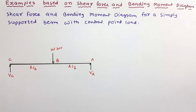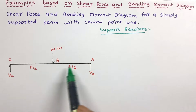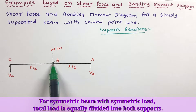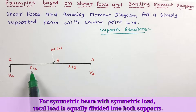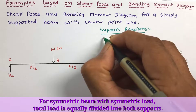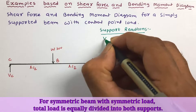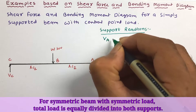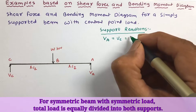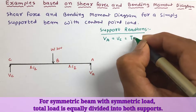To solve the problem, let us first work out the support reactions. As this is a symmetric beam with the load acting at the center, reaction Va equals Vc, which equals total load divided by 2, that is W/2.